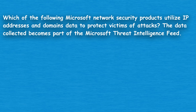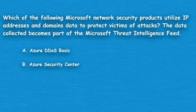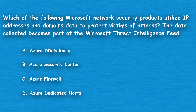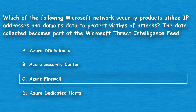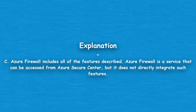The next question: which of the following Microsoft network security products utilize IP addresses and domain data to protect victims of attacks? The data collected becomes part of the Microsoft Threat Intelligence feed. Option A: Azure DDoS Basic. Option B: Azure Security Center. Option C: Azure Firewall. Option D: Azure Dedicated Hosts. The correct answer is Option C, Azure Firewall. Azure Firewall includes all of the features described. It is a service that can be accessed from Azure Security Center, but Security Center does not directly integrate such features.